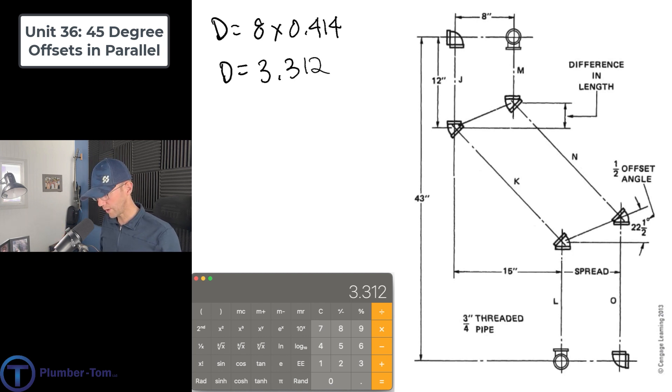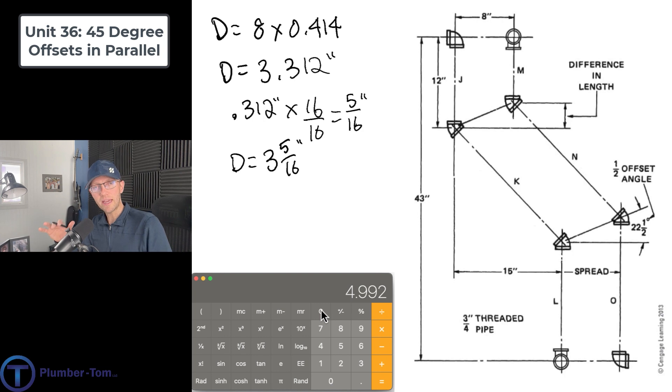Let's work that over into a fraction. These are inches, right? 0.312 of an inch times 16 over 16. We'll see what we end up with. 4.99, pretty close to 5, I'd say. So 5 sixteenths. D is going to equal 3 and 5 sixteenths. That is what we're going to add or subtract to figure out what we don't know. Let's give it a try.